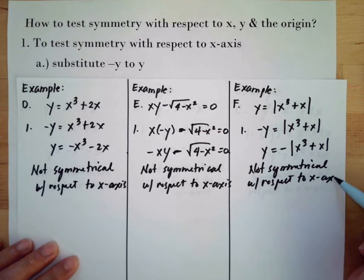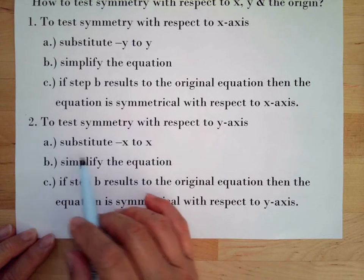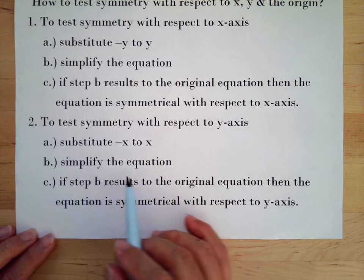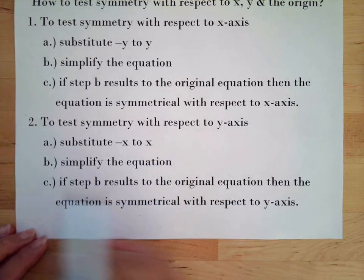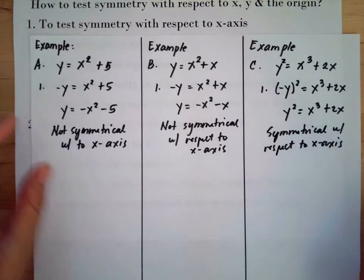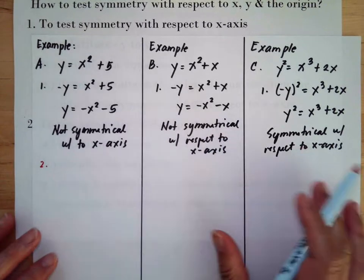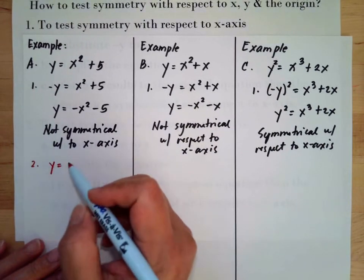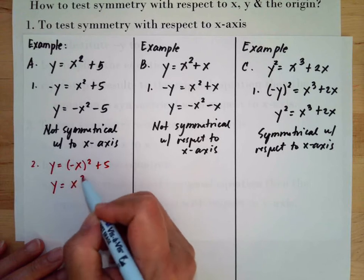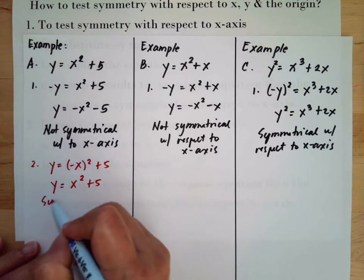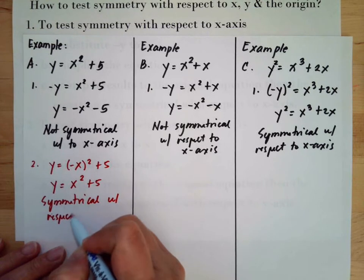To test symmetry with respect to the y-axis, substitute negative x for x, then simplify the equation. If the result equals the original equation, then the equation is symmetrical with respect to the y-axis. For our first example, substituting negative x: negative x squared is still x squared, so this one is symmetrical with respect to the y-axis.